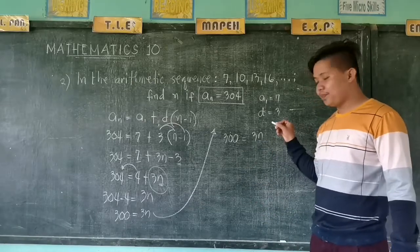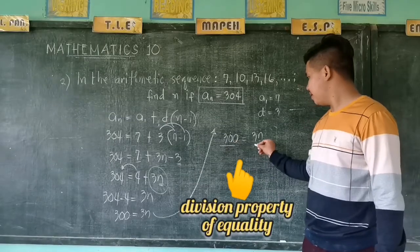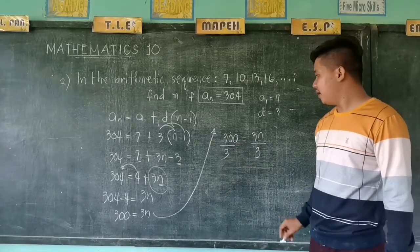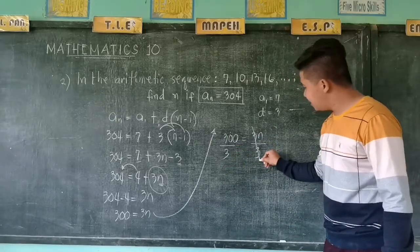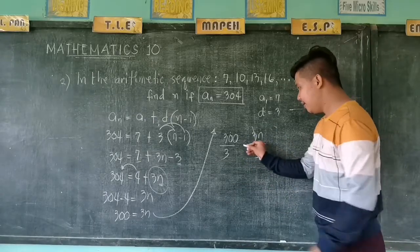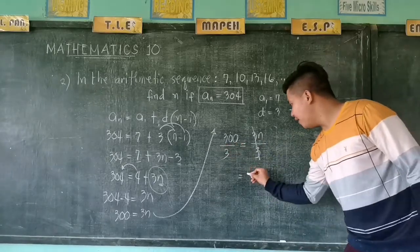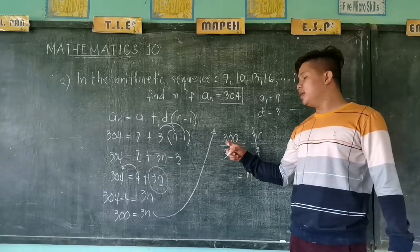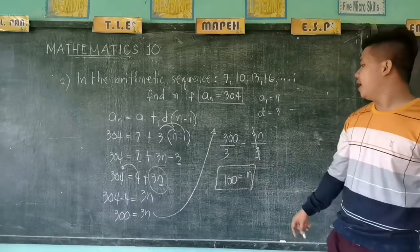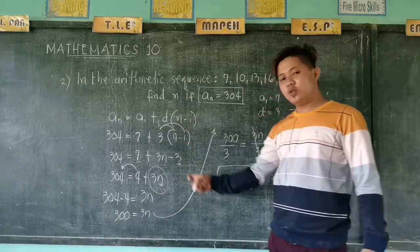300 equals 3n. How to find n? Let us divide both sides by 3. Then let's cancel this one. The proper way of writing equal sign is in the middle, in between the bar. So therefore, we have n. 300 divide 3, that is 100. So therefore, our n is 100.